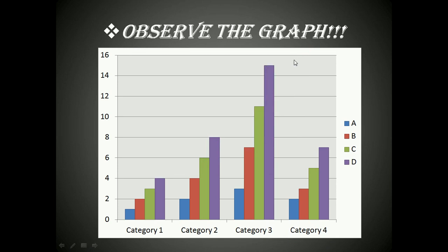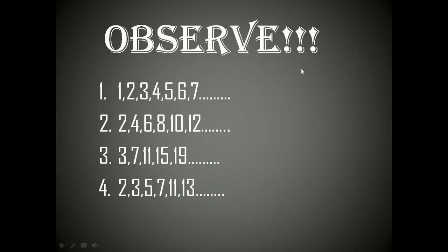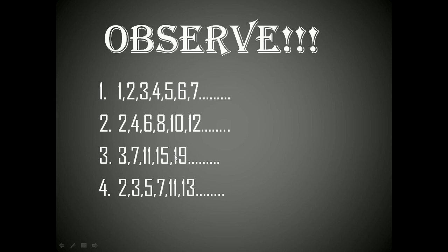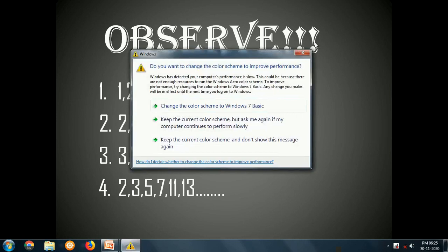The name may differ from your guess, but the meaning will be the same. Let us see the same data in numerical form. Category one: 1, 2, 3, 4, 5, 6, 7 — counting numbers. Category two: 2, 4, 6, 8, 10 — even numbers. Category three: 3, 7, 11, 15, 19 — each number increasing by four. The first three are identical in one manner, but the fourth one is different.